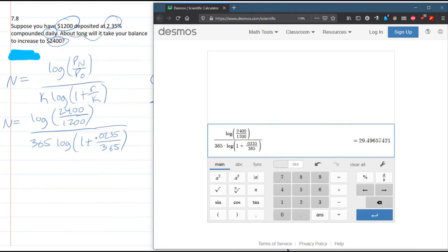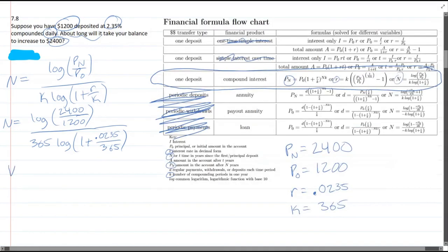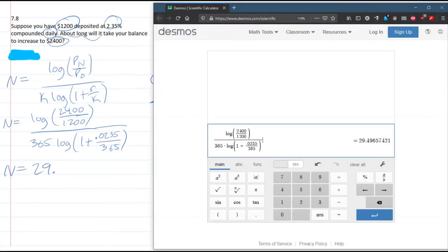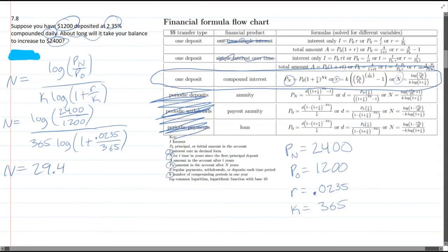Okay, and so we got that. And it equals 29 point something—29.4965.